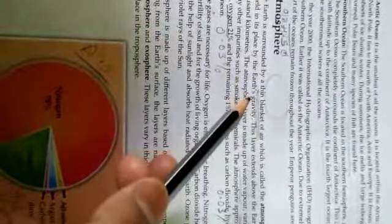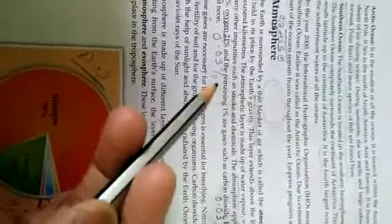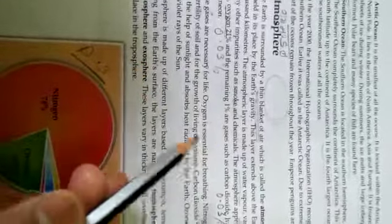In the year 2000, the International Hydrographic Organization recognized the fifth ocean as the Southern Ocean. It was called the Antarctic Ocean.